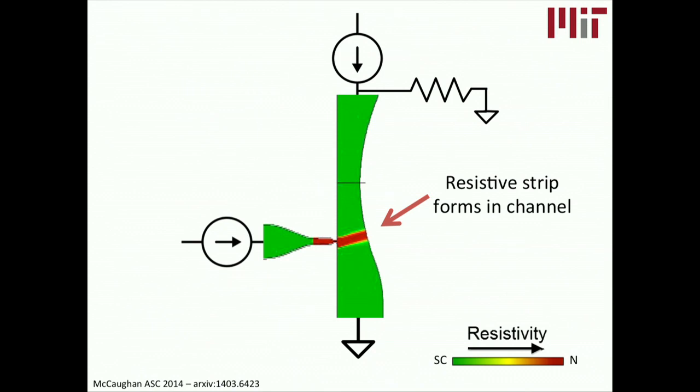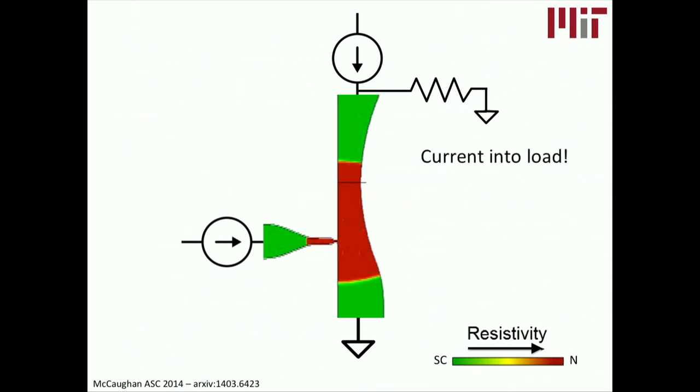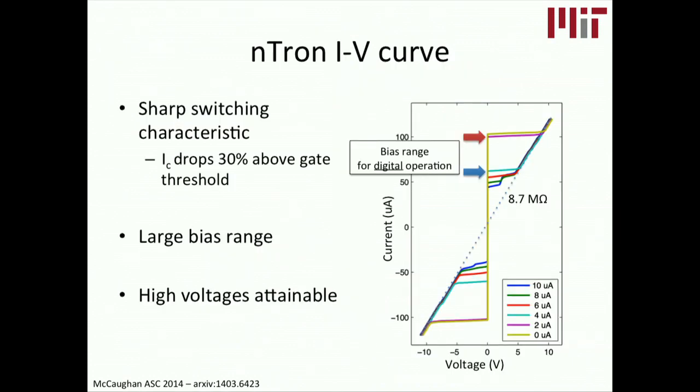Because that channel Ic has been dropped, actually a resistive strip will form in the channel because now the channel can no longer carry all of the bias current anymore. So you get this resistive strip. This resistive strip continues to grow, and at the end of the day, you end up with current into your load. So you've got a digital comparator. With no current in, you get no current out. With some current in, you get a current out. And specifically, we get an amplified current out in our case.